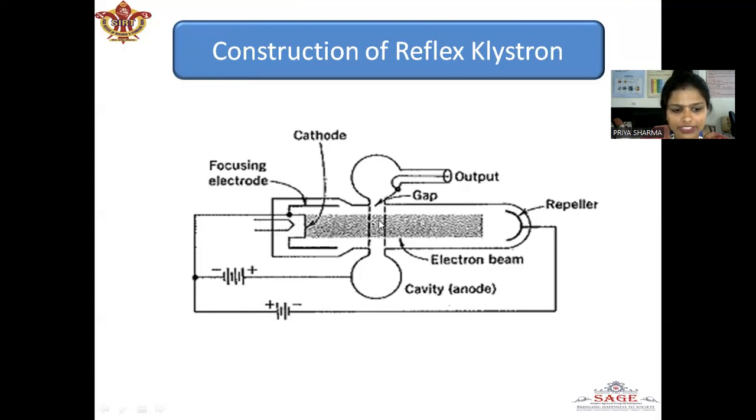The return time for the early electron is greater as the depth of penetration into the repeller space is more. The early electron and the reference electron appear at the gap for the second time. First, it goes from here. It is the first journey and when repelled back, it comes here for the second time at some instant.